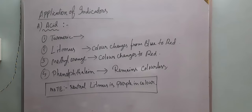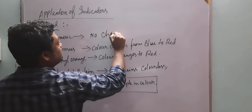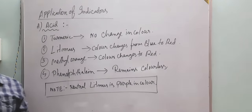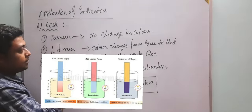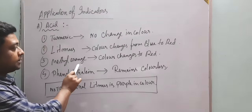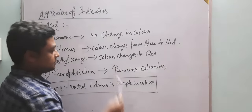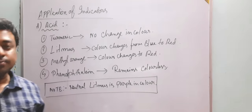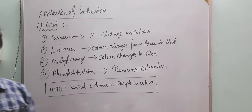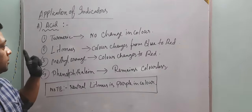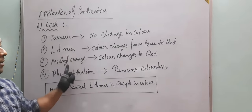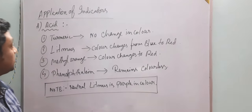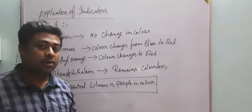To summarize: turmeric powder shows no change in color when acid is added, as proved through the experiment. Blue litmus changes color from blue to red when acid is added. Methyl orange also changes to red. Phenolphthalein remains colorless. Note: neutral litmus is always purple in color. Litmus is obtained from lichen belonging to Thallophyta. Blue litmus turns red with acid, methyl orange turns red with acid, and phenolphthalein remains colorless with acid.